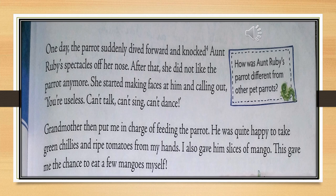One day, the parrot suddenly dived forward and knocked Aunt Ruby's spectacles off her nose. 'Knock' means struck. After that, she did not like the parrot anymore. She started making faces at him and calling out, 'You are useless. Can't talk. Can't sing. Can't dance.' Grandmother then put me in charge of feeding the parrot. He was quite happy to take green chillies and ripe tomatoes from my hands. I also gave him slices of mango, which gave me the chance to eat a few mangoes myself.